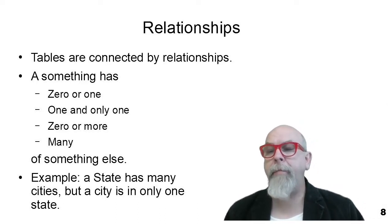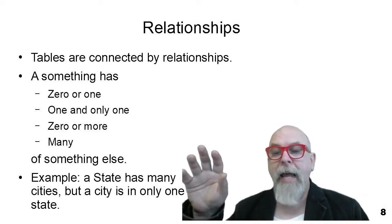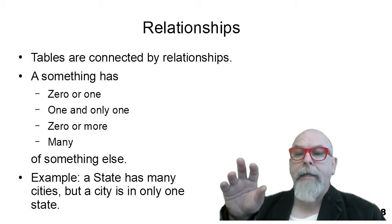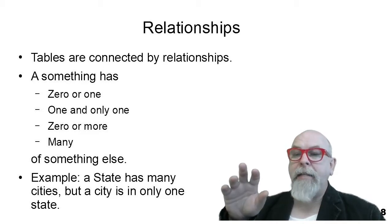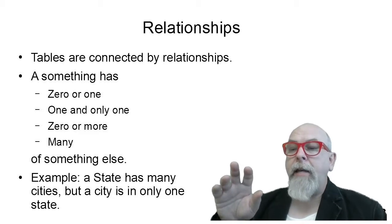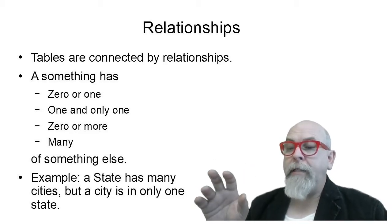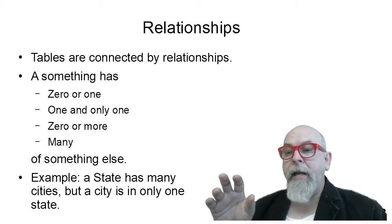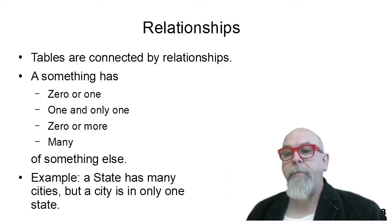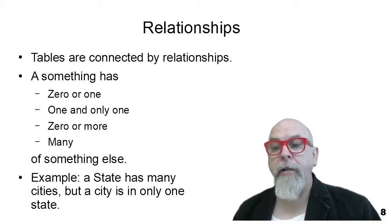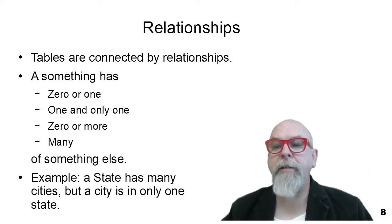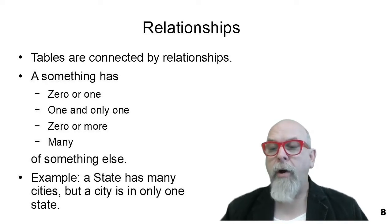For example, imagine you have an entity called 'state' and another entity called 'city.' A state has many cities, but a city belongs to one state. So the relationship between cities and states would be one-to-many. The relationship between states to countries would also be one-to-many. There are lots of other relationships, and we'll go through them, but let's look at the symbols we use to draw relationships.